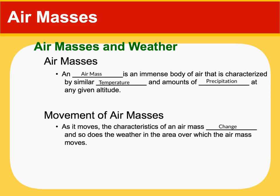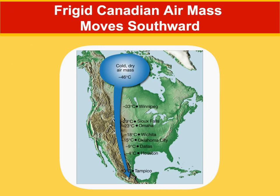An air mass is just a huge body of air, and there's two things it's bringing to an area: it's going to have similar temperature and a certain amount of humidity — it could either bring moist, humid air or dry air. As this air mass comes into an area, it changes. Imagine an air mass coming from a very cold area such as northern Canada and the poles, starting out at negative 46°C. As it moves south, it's going to get much warmer, so it takes the characteristic of where it's coming from, but as it slowly moves into different areas, it will change.